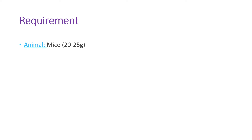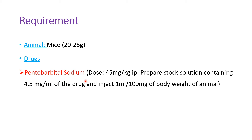Now we will see the requirements for this experiment. Animals: mice 20 to 25 grams. Drugs: pentobarbital sodium, dose 45 mg per kg intraperitoneally. Prepare a stock solution containing 4.5 mg per ml of the drug and inject 1 ml per 100 grams of the body weight of the animal.